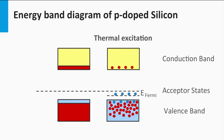For silicon at room temperature, many electrons of the valence band can be excited to the acceptor states. As a result, we have more free mobile holes than mobile electrons in a p-type semiconductor. The electrons are the minority charge carriers and the holes are the majority charge carriers. As the holes are the majority charge carriers, the Fermi level will be closer to the valence band than to the conduction band.